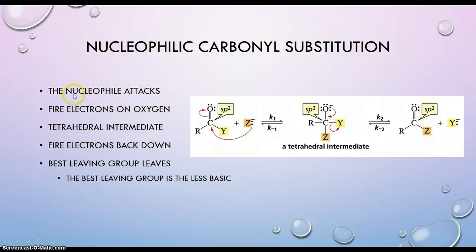So nucleophilic carbonyl substitution: the nucleophile attacks, and then you kick up these electrons on the oxygen. The electrons come back down, and then the best leaving group leaves. The best leaving group will be the one that is less basic. So here we know that this Z thing is more basic than this Y thing because it is a nucleophilic carbonyl substitution reaction.